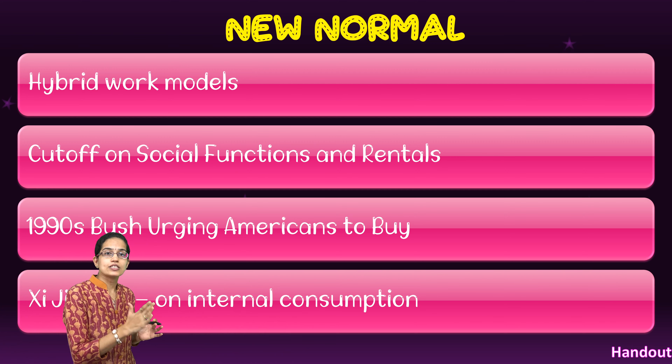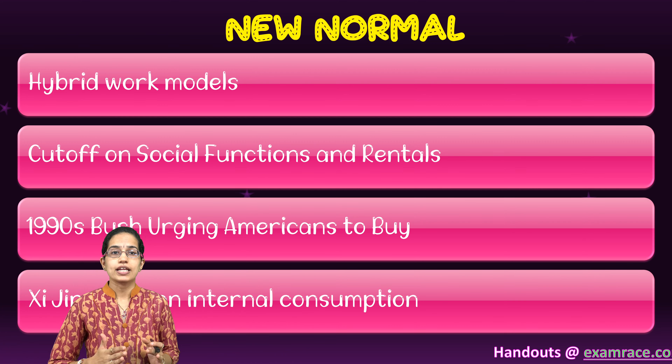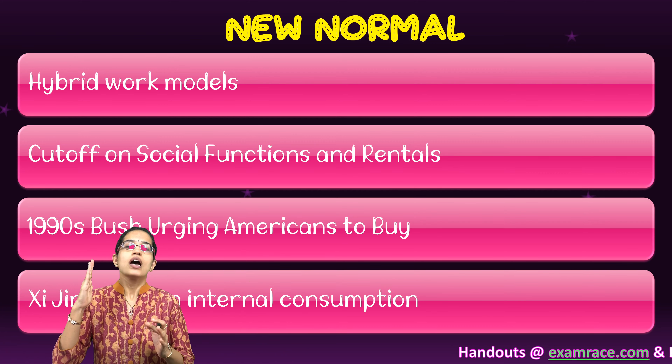Welcome. We'll be talking about some of the key highlights from this edition of DTE. The first thing we need to understand is the new normal, which talks about a hybrid workspace — an amalgamation of offline and online modes. There will be differences in office plans, social functions, and rentals will significantly reduce. This has led to a serious impact on the economy: India's GDP declined by 23.9% in this quarter, marking a significant economic concern.